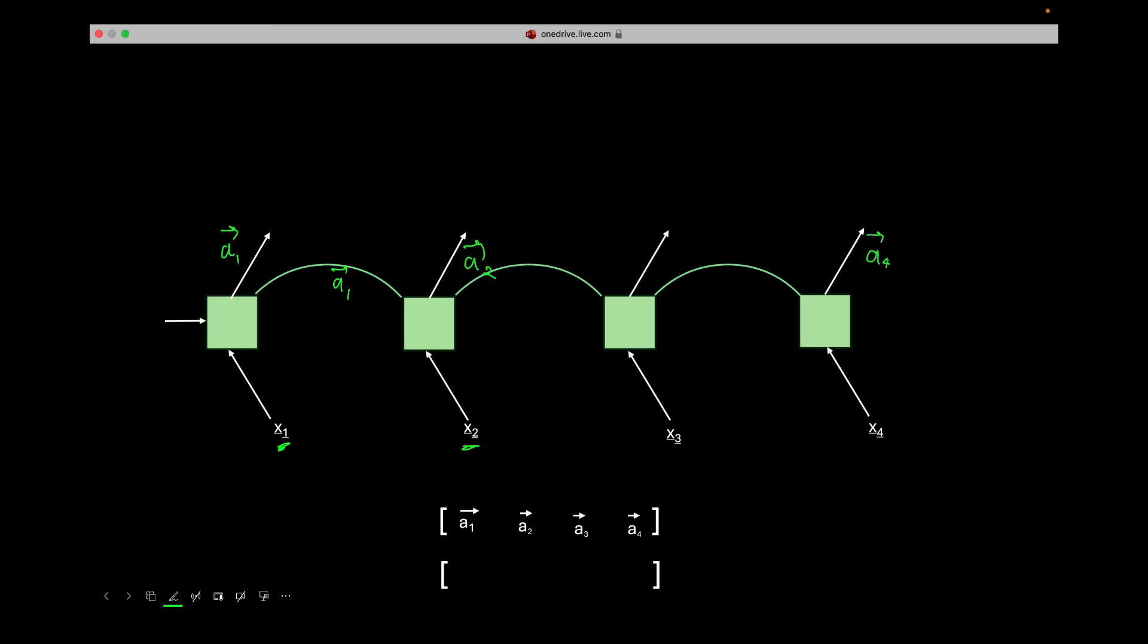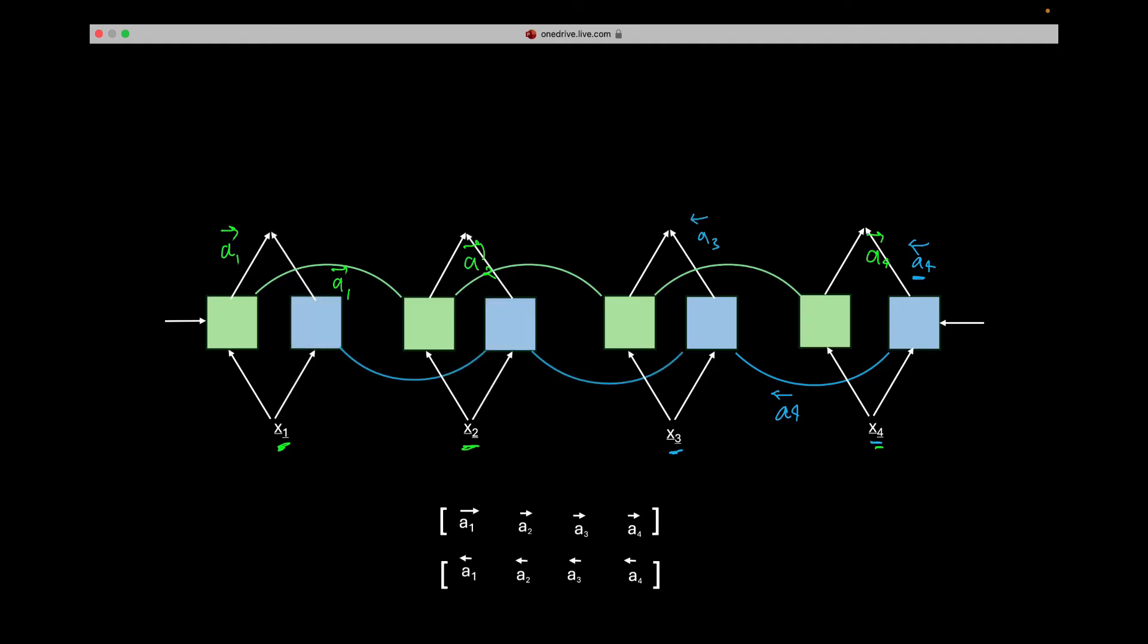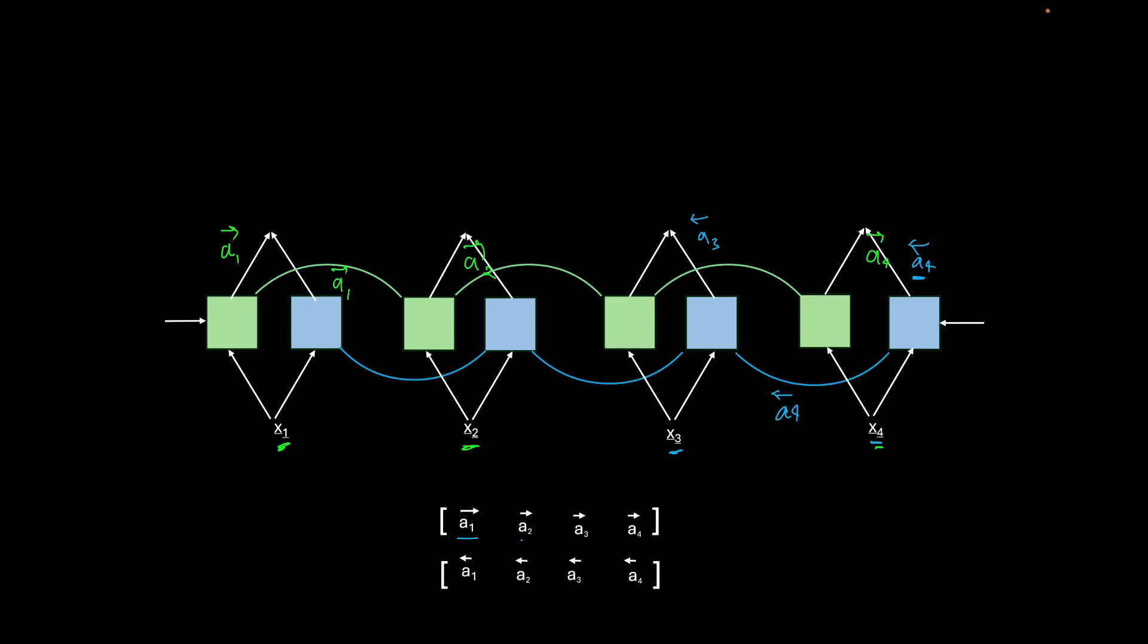Now once we have reached at the end of the sentence, now we will move backward with the blue RNN cell. So blue RNN cell will take the last word as an input and it will produce A backward 4. This A backward 4 will be passed as an input along with this last second word to produce A3 backward, and similarly the process will go till the beginning of the sentence.